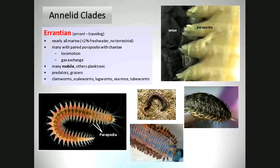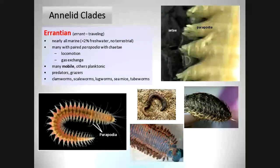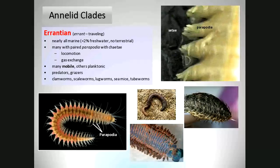Gametophyte — where does the sperm and the egg come from? In lab when we looked at the gametophyte of the mosses and the fern, we looked for structures on the gametophytes. We said these were the structures in which sperm or egg were being produced. Do you remember the name of those structures? They both start with the same letter. One produced the sperm, and one looked like a vase.